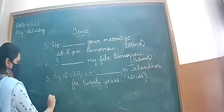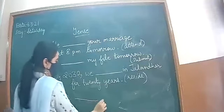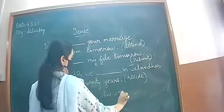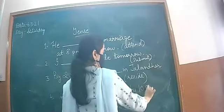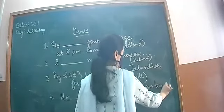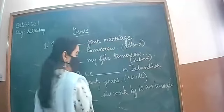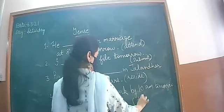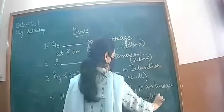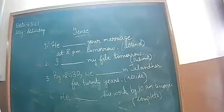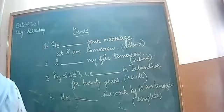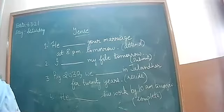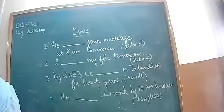The last sentence is: he dash his work by 10 a.m. tomorrow. These are the four sentences. Future tense has four parts: number one is simple future tense, second is future continuous tense, third is future perfect tense, and the last one is future perfect continuous.